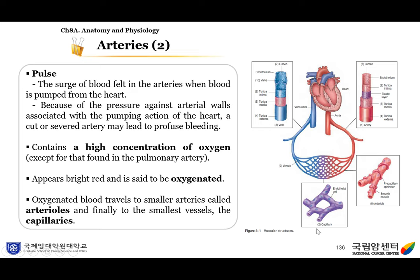From the heart, the largest artery is the aorta, then arteries, and in the terminal part of the artery there are arterioles, then capillary vessels. Here, oxygen and CO2 exchange occurs, and waste materials go into the veins. The first part of the vein is venules, then many venules merge into the vein. The largest vein is the vena cava, which enters into the right atrium of the heart.